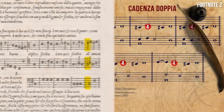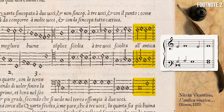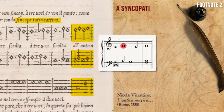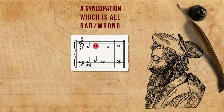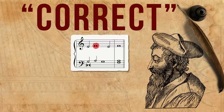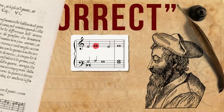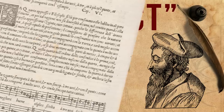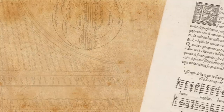In Vicentino's treatise from 1555, probably the earliest treatise which speaks of it, it is described along with the term syncopa tutta cattiva — a syncopation which is all bad or wrong. Thus, Vicentino confirms for us that this progression is officially wrong, yet it exists, and it is correct to use it. As in many other cases, rules describe the practice in a way which is too general to deal with all the exceptions and the irregularities generated by living musical traditions.